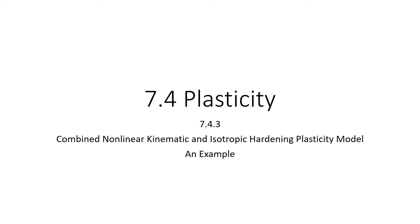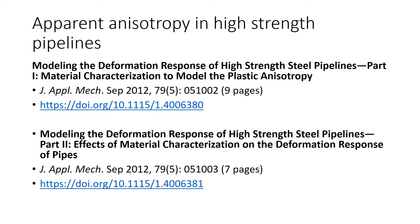In this video, I'll present a numerical example that highlights the capabilities of the combined nonlinear kinematic and isotropic hardening plasticity model. The example presented here is inspired by two papers we published a few years ago, in which the apparent anisotropy in high-strength steel pipelines are modeled using this material model. The two links for these papers are provided for those interested in learning more about some applications for this model.